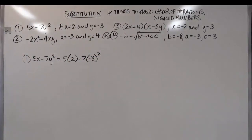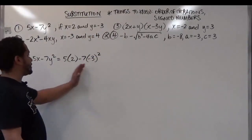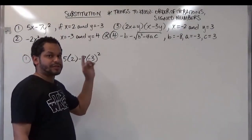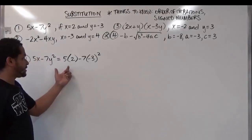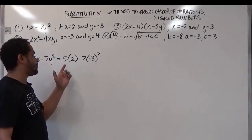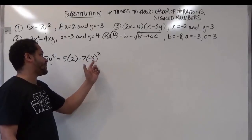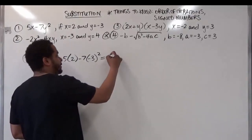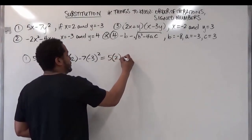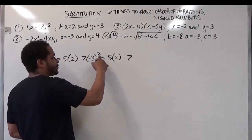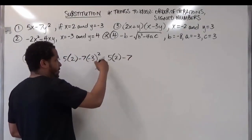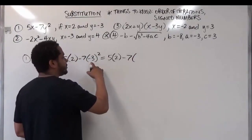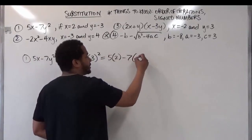Now we have to follow the order of operations. There's going to be no change of signs because order of operations tells us to follow exponents first. There's nothing to do inside the parentheses, so secondly we move to exponents — there's an exponent outside of the negative 3. We want to square the negative 3 and rewrite everything else: 5 times 2 minus 7 times negative 3 squared. Negative 3 squared gives us positive 9 because a negative times a negative gives us a positive.